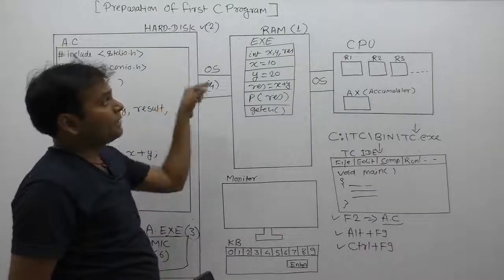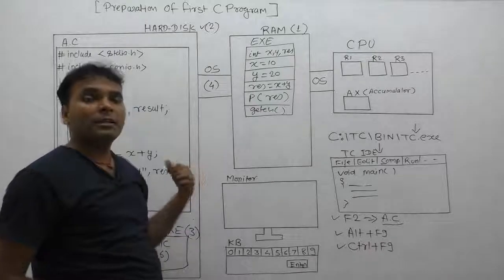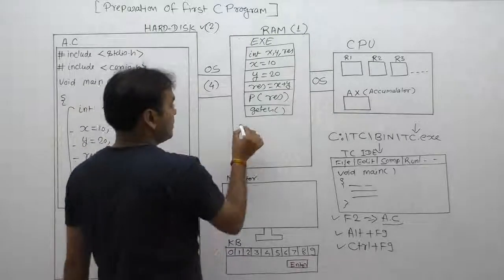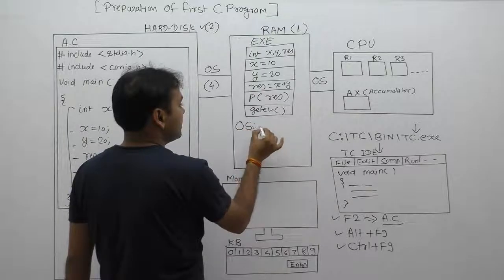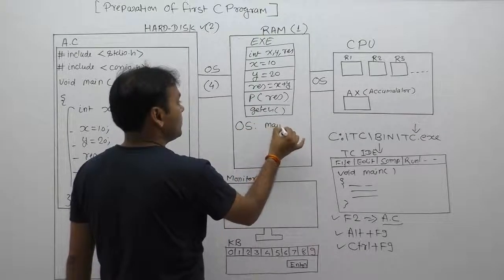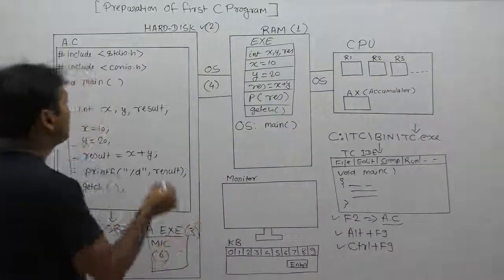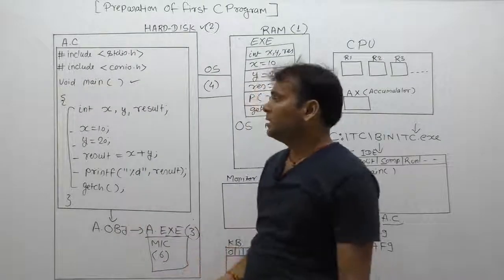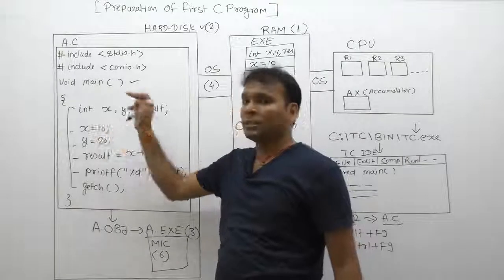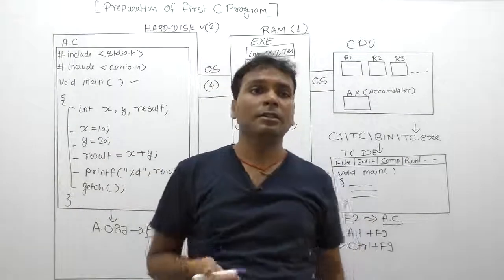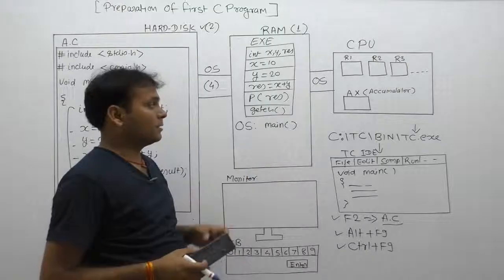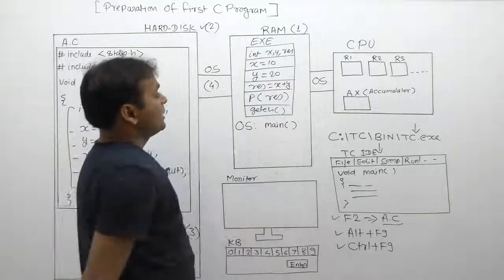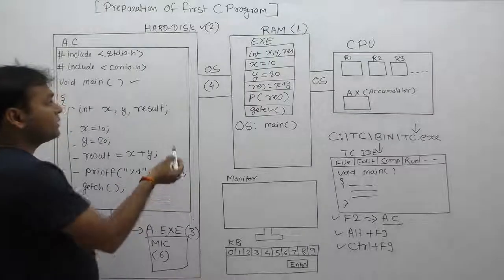Once the machine code is loaded from hard disk to RAM memory, this process is known as the loading process. After the loading process is complete, the operating system itself internally calls the main function. This means that all executable instructions must be provided inside the body of the main function, since by default it is the main function that is called by the operating system.